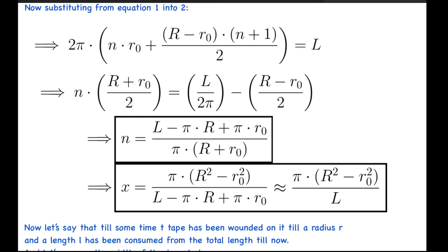Now solving ahead, finally we get the value of n to be (L - π·R + π·r0) / [π(R + r0)]. And again from the first equation, as n·x was equal to (R - r0), we get the value of x to be π(R² - r0²) / L approximately.